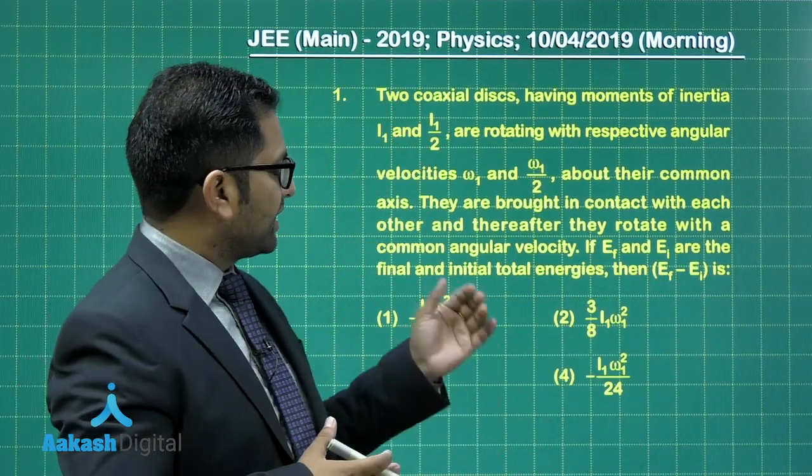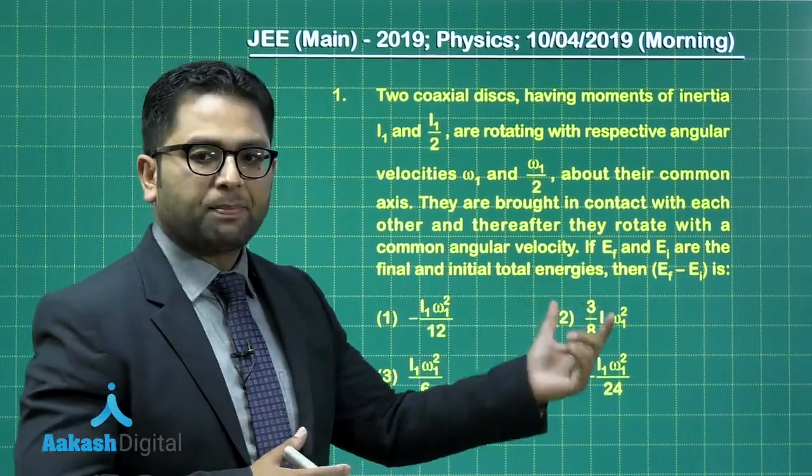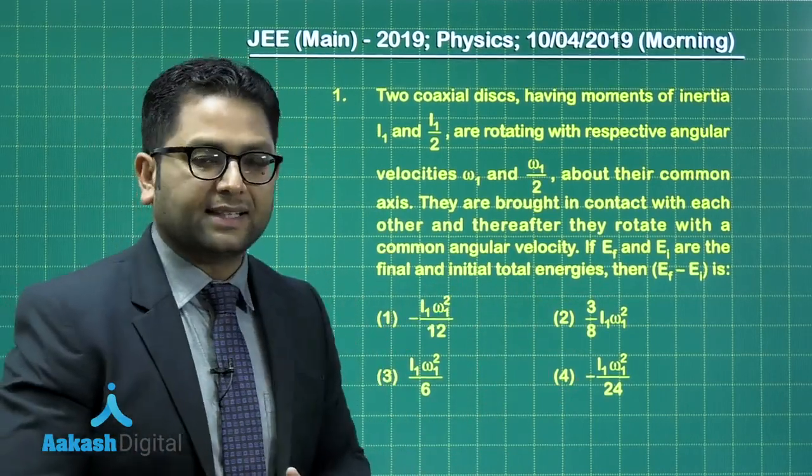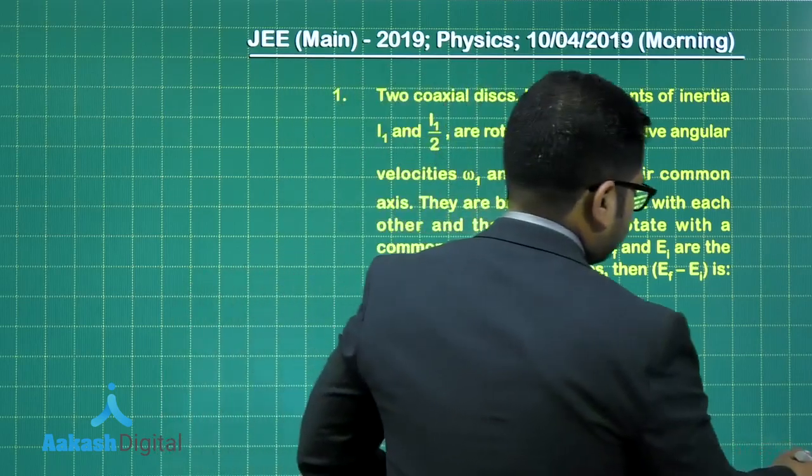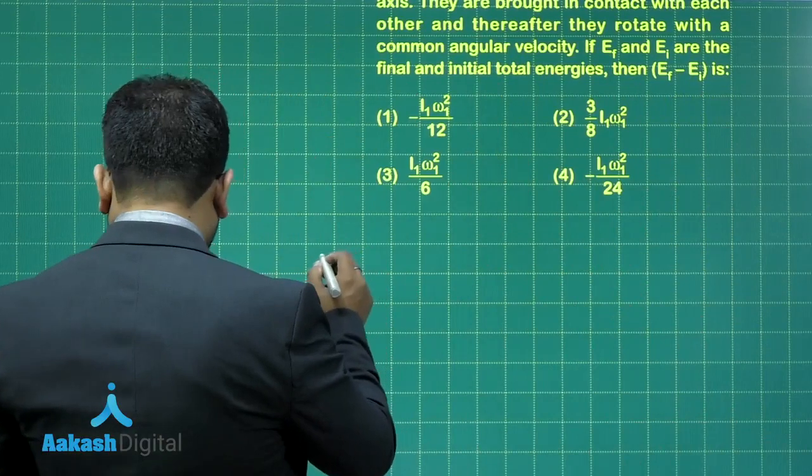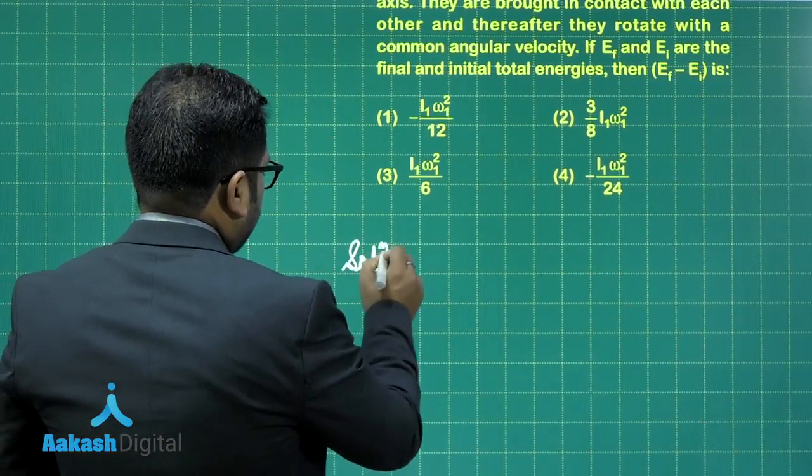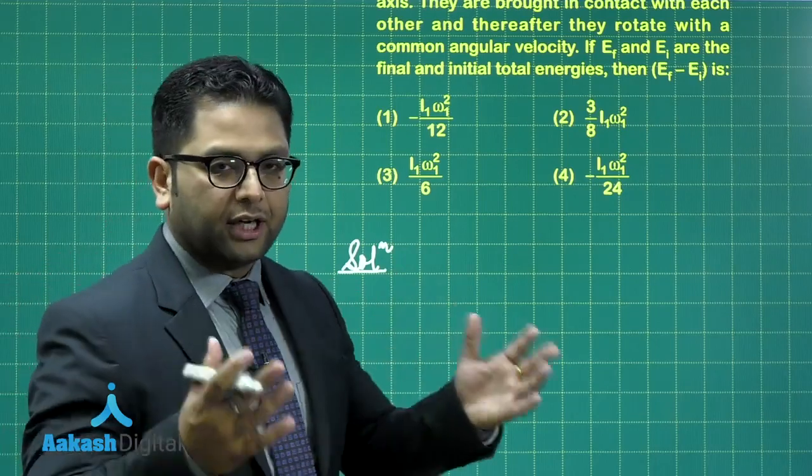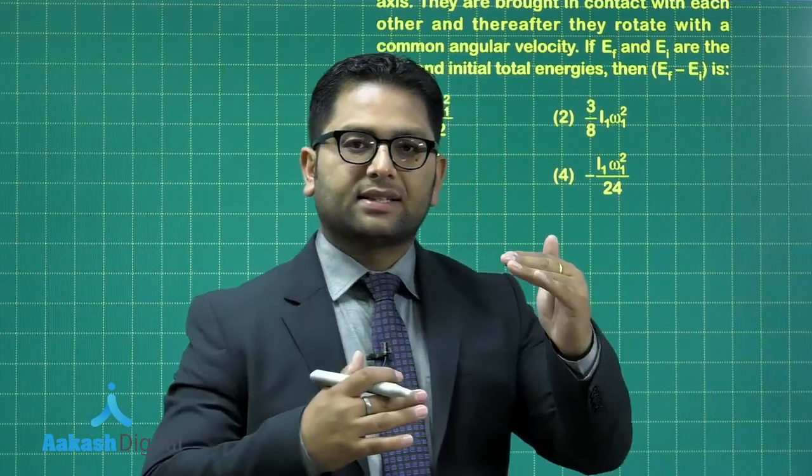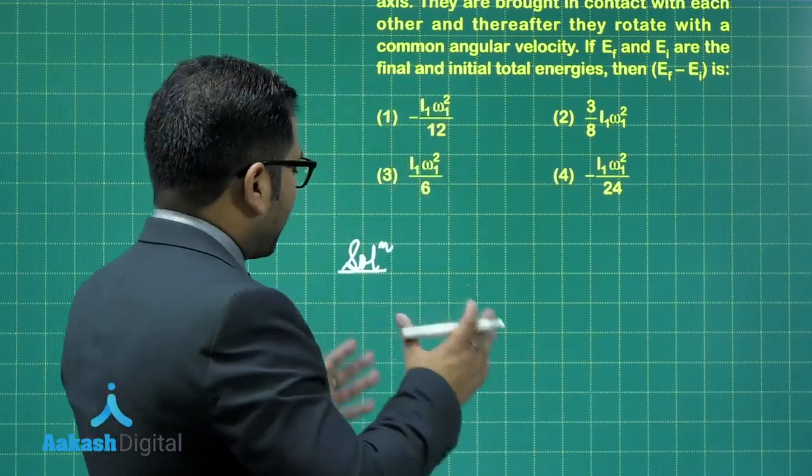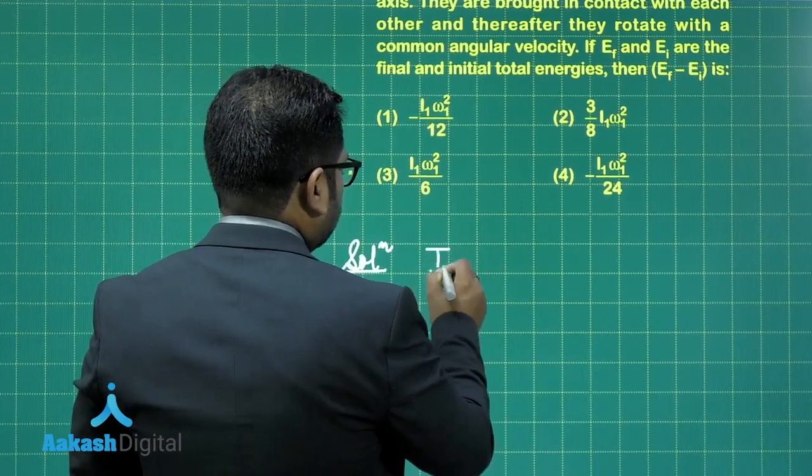The question specifically says the difference in total energy, but it's very clear when I say total energy, it is obviously the kinetic energy given this particular situation. Right then, so if I start with the solution part, the angular momentum is conserved since torque about the central axis is zero. Individually, friction is acting on the two disks, but the torque being equal and opposite, eventually the net torque becomes zero.